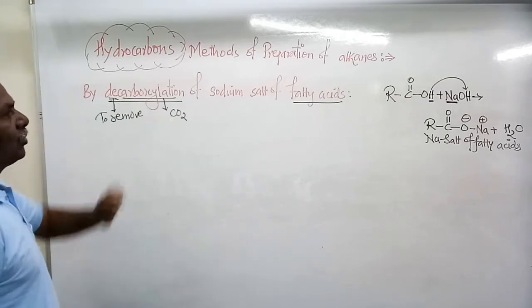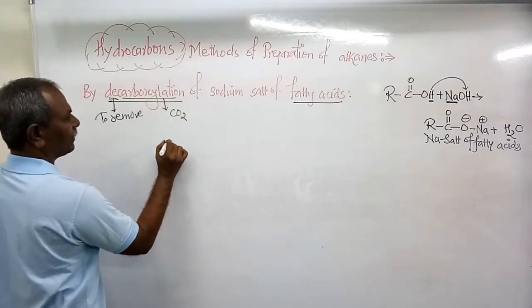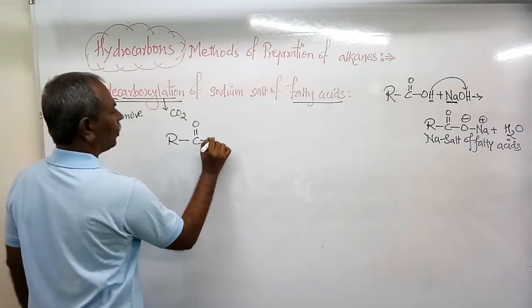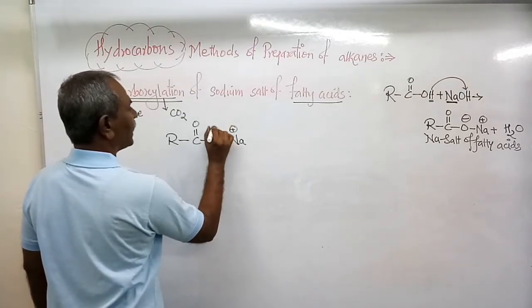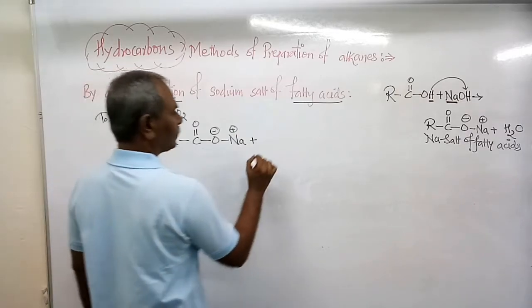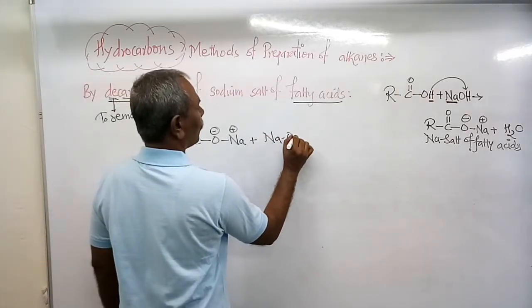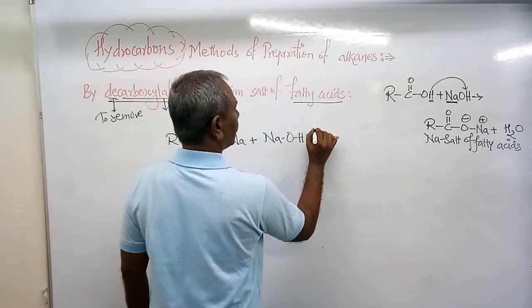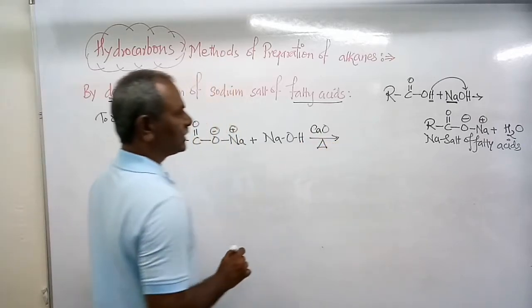The general reaction is R-C double bond O-O-Na+ plus NaOH. The reaction is carried out in the presence of calcium oxide and heating is necessary.